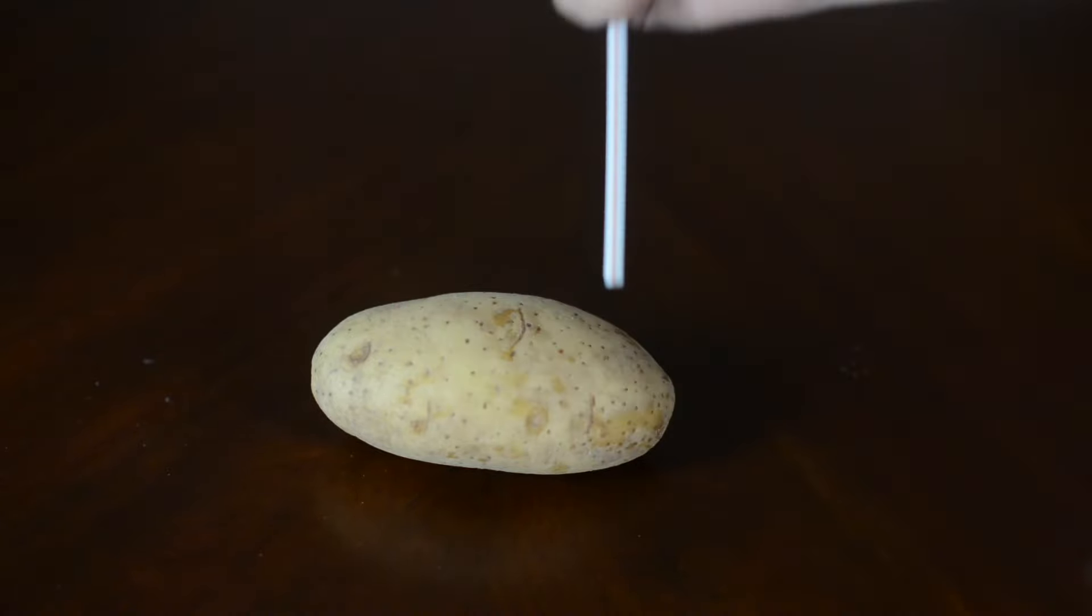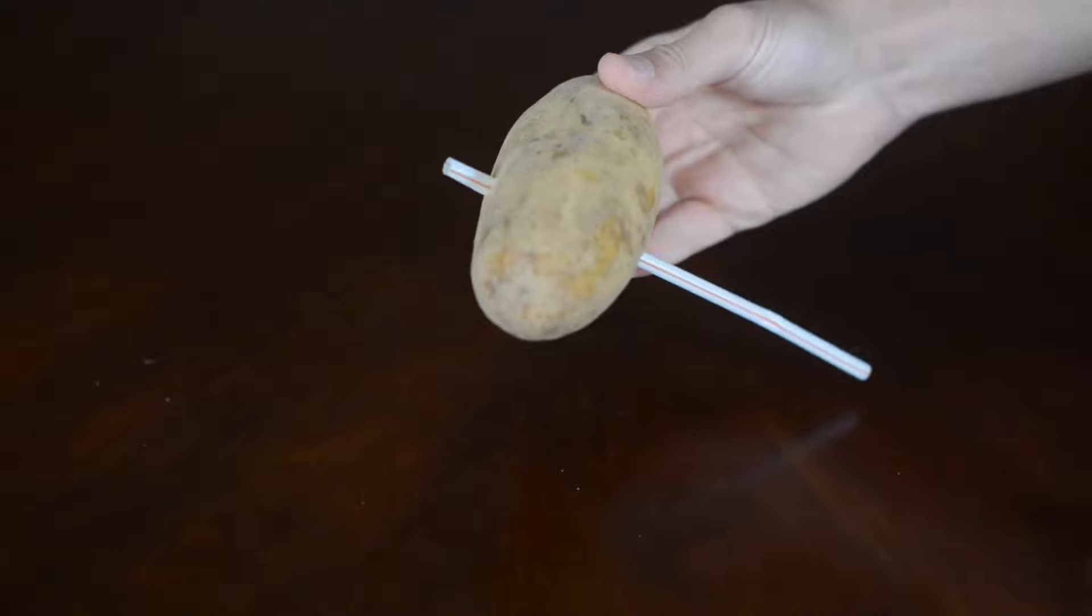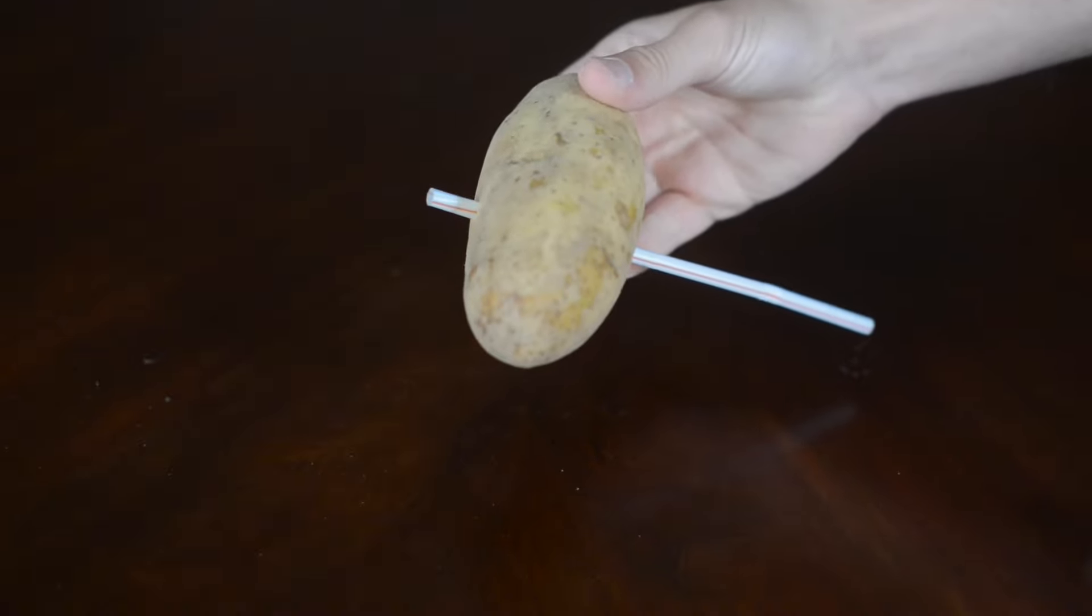The secret is you put your thumb over the top of the end of the drinking straw. And what that does is it traps air inside of the drinking straw. And when you trap air inside the straw, the air molecules compress and give the straw strength so you can pierce it right through that potato.